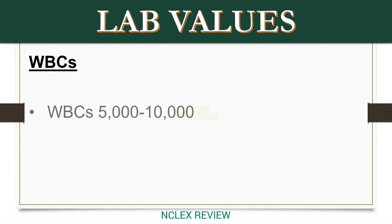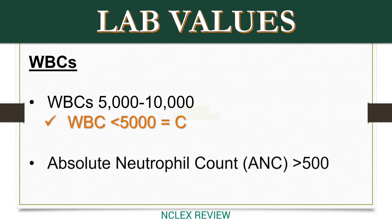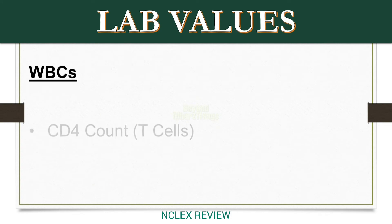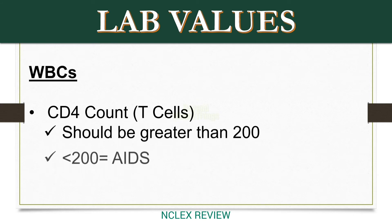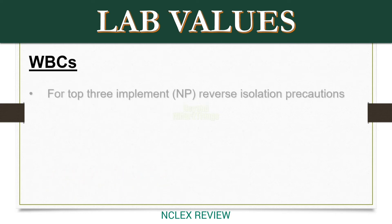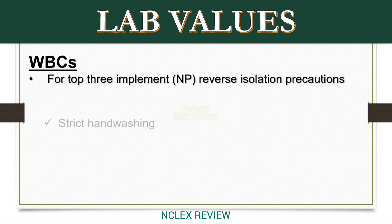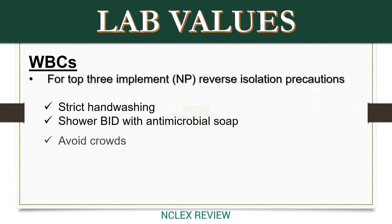WBCs normal range 5,000 to 10,000. WBC less than 5,000 equals C. Absolute Neutrophil Count (ANC) should be greater than 500; ANC less than 500 equals C. CD4 count (T-cells) should be greater than 200; less than 200 equals AIDS — CD4 less than 200 equals C. For all three: implement NP reverse isolation precautions, neutropenic precautions, strict handwashing, shower BID with antimicrobial soap, avoid crowds, private room, limit number of staff entering the room.